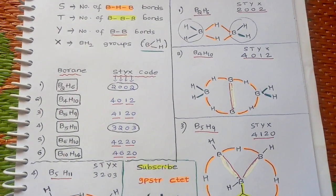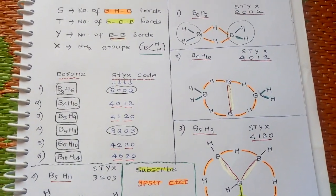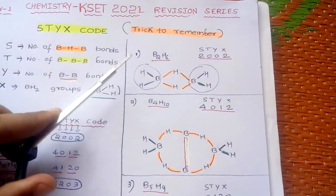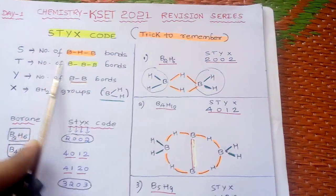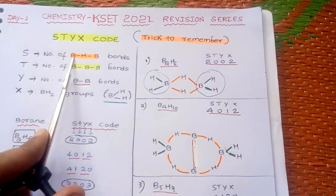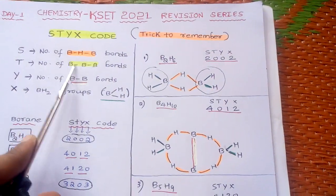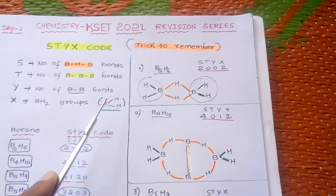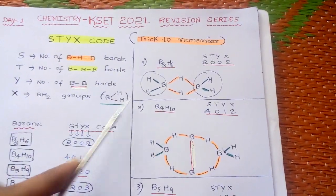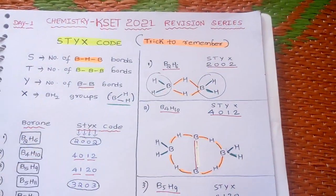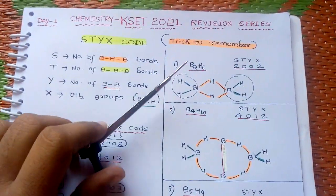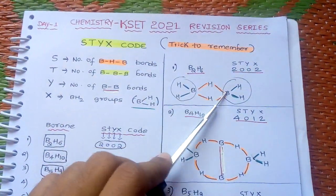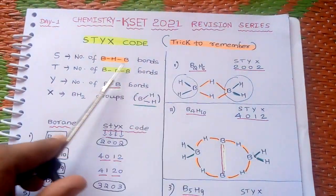Now let's see the structures. In the diagrams, orange color represents BHB bonds, the highlighted color represents BBB bonds, red color represents BB bonds, and green color represents BH2 groups. Simply by seeing these colors you will understand each bond type.